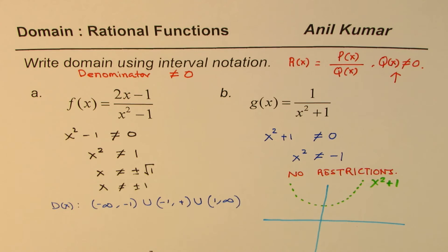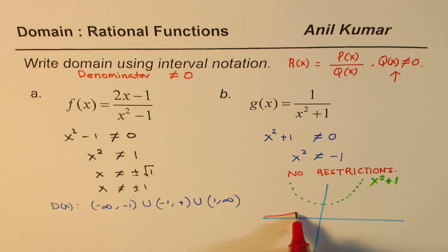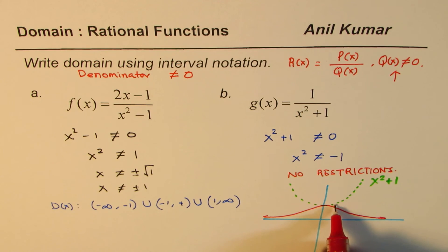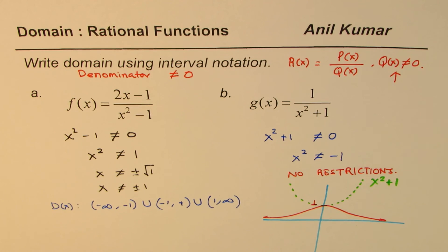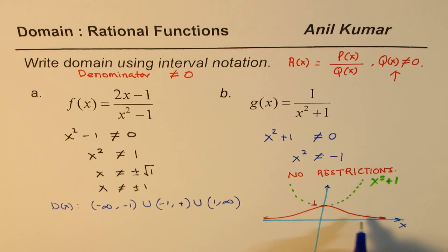So when you sketch this graph, then what you get is kind of like this. Anyway, where this point is 1. So this is how you get. So the domain is all real numbers here. There are no restrictions at all. So that is how this function looks like.